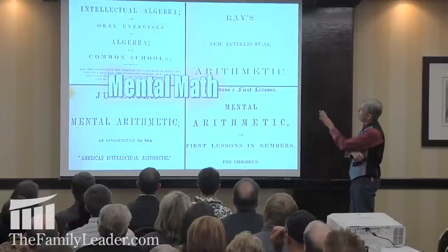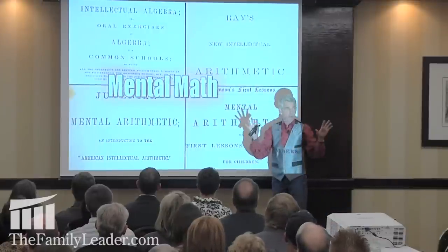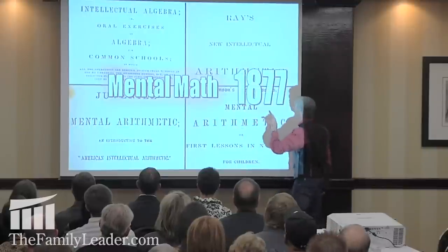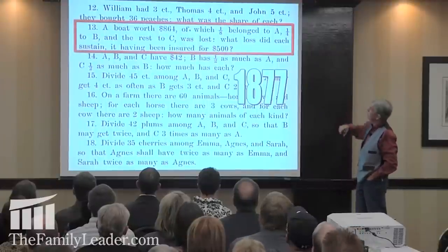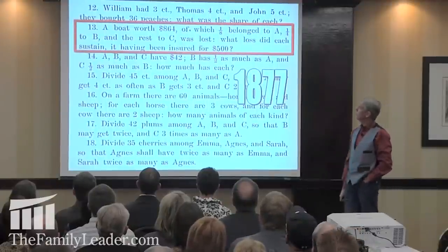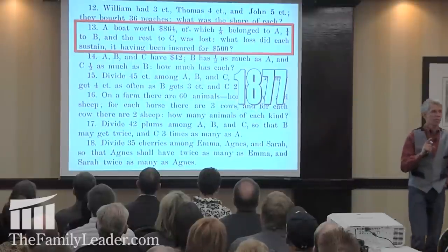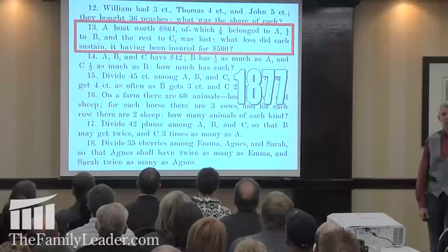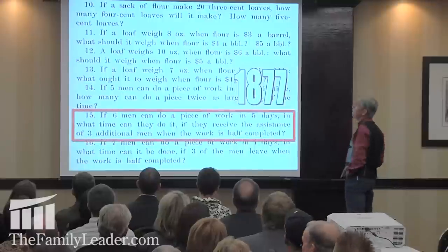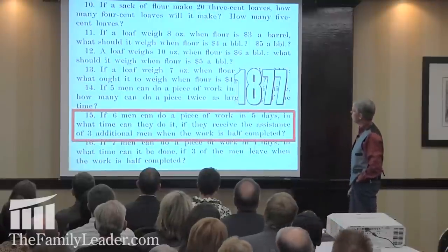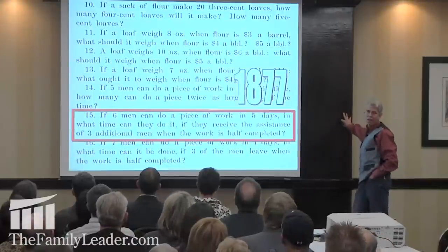These are all 'mental math' — all of these math books require you to solve the problems in your head; you're not allowed to use pen and paper. From 1877 mental math: 'A boat worth $864 of which one-eighth belonged to A, one-fourth to B, and the rest to C, was lost. What loss did each sustain, it having been insured for $500?' Solve that in your head. That's sixth-grade math. And: 'If six men can do a piece of work in five days, in what time can they do it if they receive the assistance of three additional men when the work is half complete?'